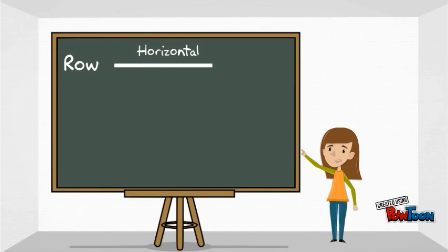A row is a horizontal line. That means it goes left and right. A column is a vertical line. That means it goes up and down.